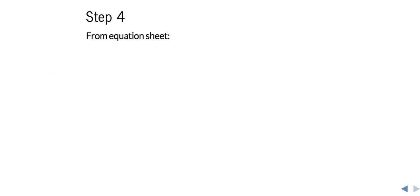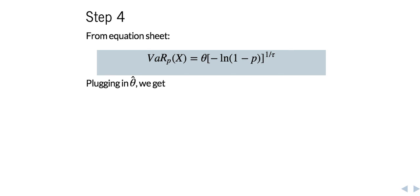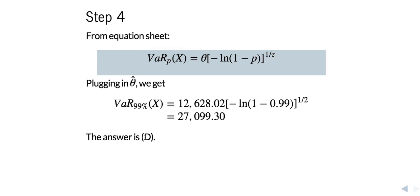Now we're ready to calculate the value at risk. Value at risk is also given on the equation sheet in closed form. So p here will be 0.99, right, because we're interested in the 99th percentile value at risk. The θ here will be taken from the previous slide. It will be our method of moments estimate. And τ will simply be 2 because that's given to us. So simply plugging things in, we get that our value at risk at the 99th percentile is $27,099.30. That's quite a mouthful. And so that's closest to D. And that's our final answer.